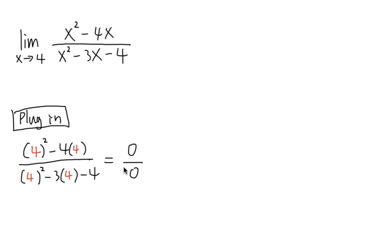In this situation, this means we have to do more work. So let's come back to our expression. I see that x squared minus 4x, we can factor out an x. So we'll do that: x, and I will have x minus 4 left in the parentheses.